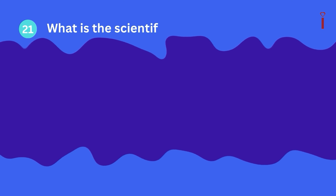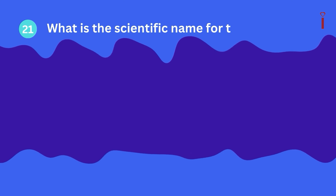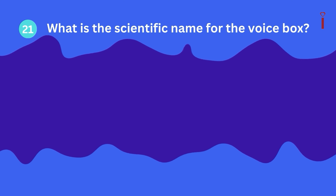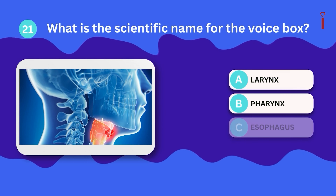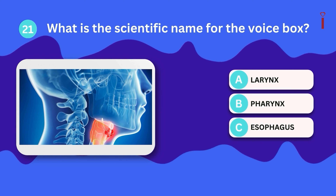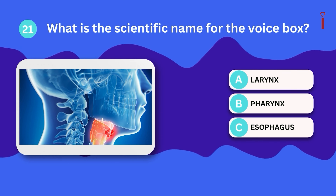Question 21: What is the scientific name for the voice box? A. Larynx, B. Pharynx, C. Esophagus.